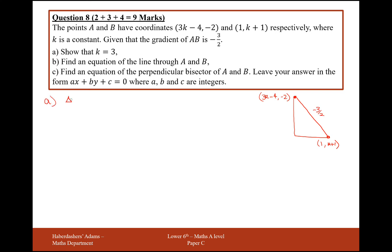The difference in y over difference in x: the difference in the y-coordinates is from minus 2 down to k+1. So we do (k+1) minus (-2). And going from here to 1 on the x-axis, it's going to be 1 take away (3k-4). Effectively, this is y_B minus y_A over x_B minus x_A.